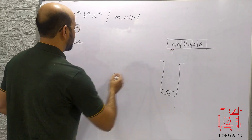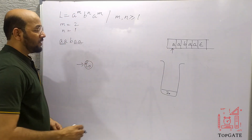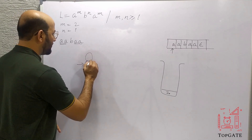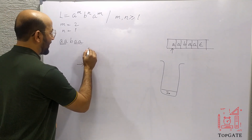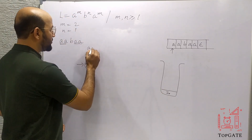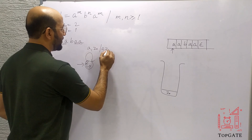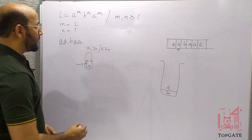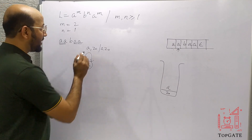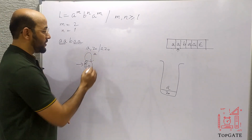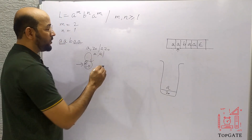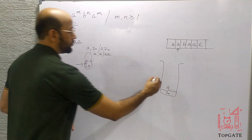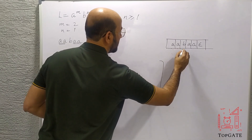We start at initial state Q0. On Q0, we are reading A and the top stack element is Z0, so we take a self-loop and push A — writing A Z0, which means A is pushed on top of Z0. The pointer moves to the next A. For the second A, the top stack element is now A, so we push again, resulting in AA on the stack. The pointer moves to B.